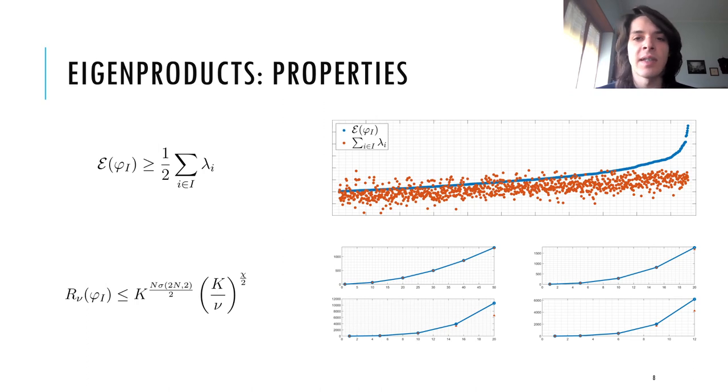This gives an intuitive explanation of why eigenproducts are so good at increasing the expressive power of the Laplacian eigenbasis. You can see that in fact their frequencies are evenly distributed and lie at a very high value.